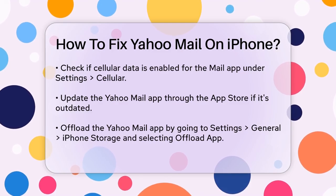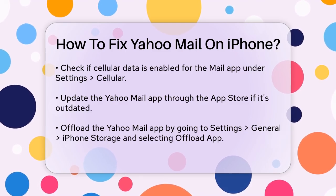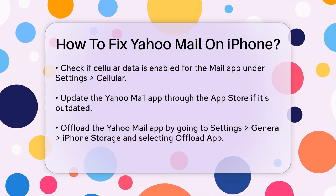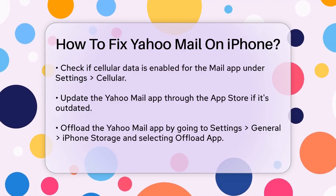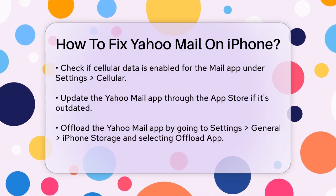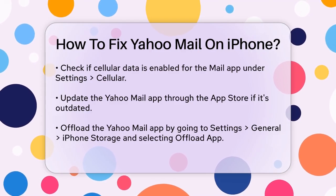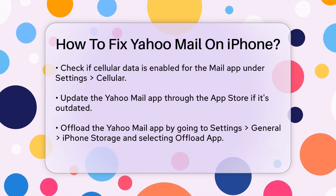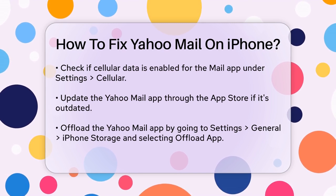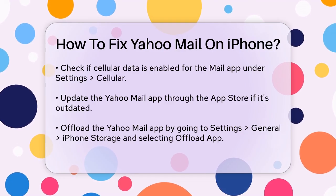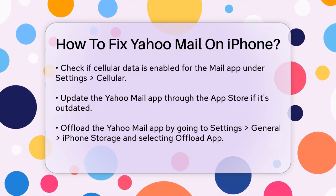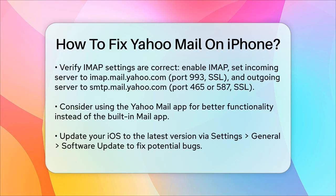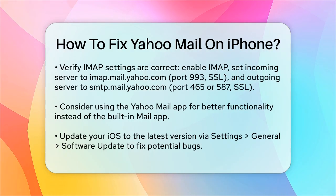IMAP settings are also crucial. Ensure that IMAP is enabled for your Yahoo account. Go to your Yahoo account settings on your iPhone, tap on Advanced Settings, and make sure IMAP is turned on. The incoming mail server should be imap.mail.yahoo.com with port 993 and SSL enabled. The outgoing mail server should be smtp.mail.yahoo.com with port 465 or 587 and SSL enabled.